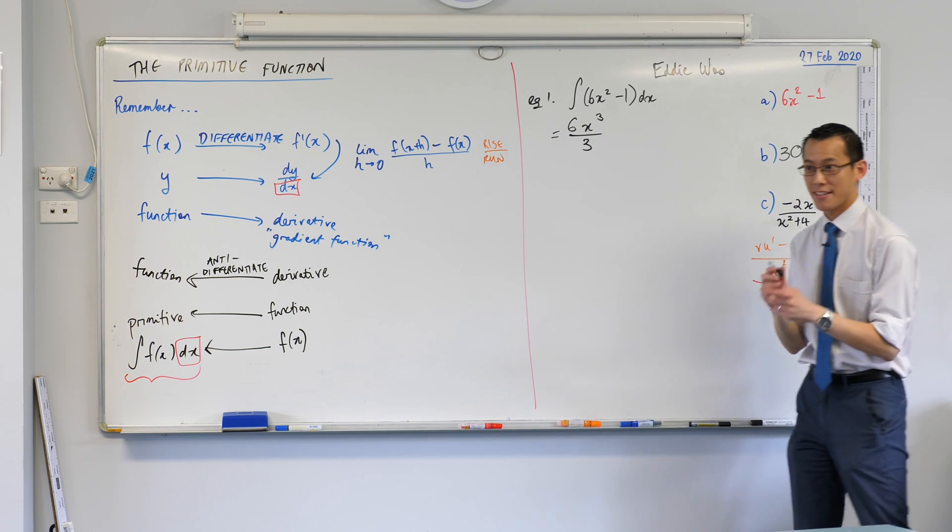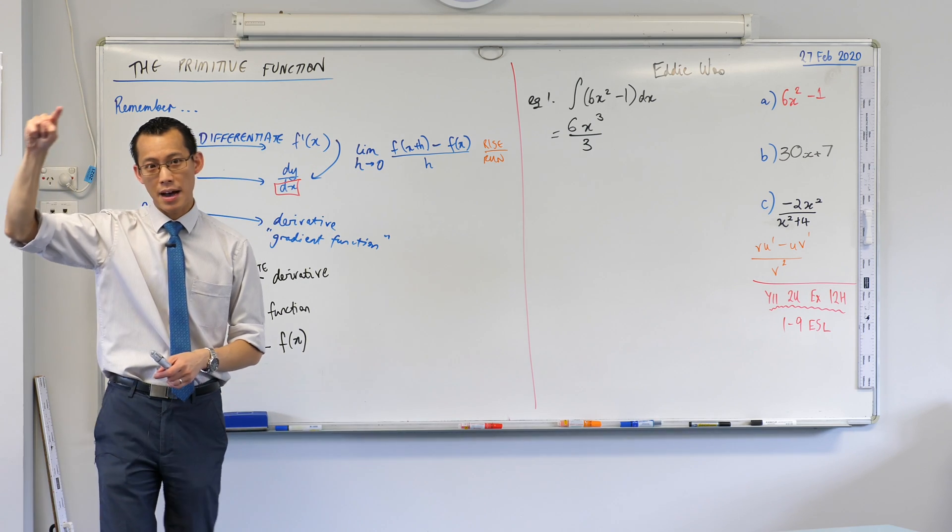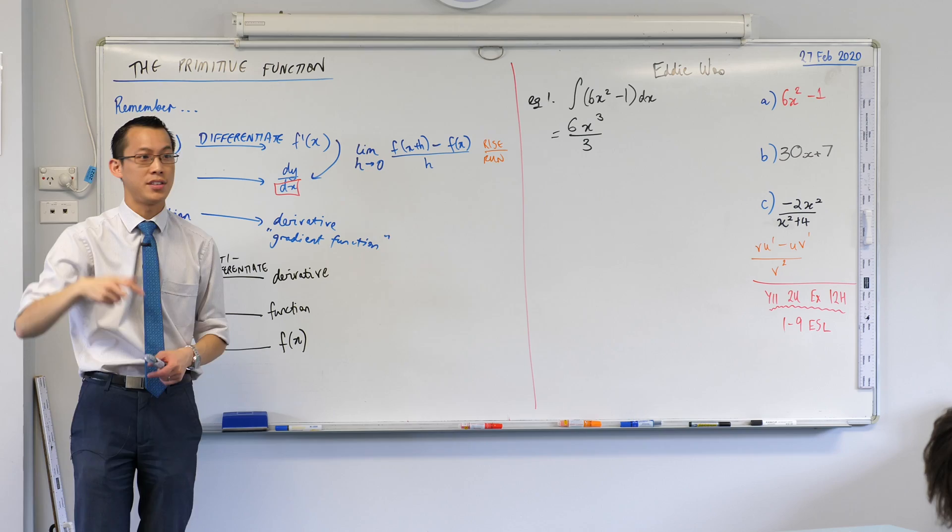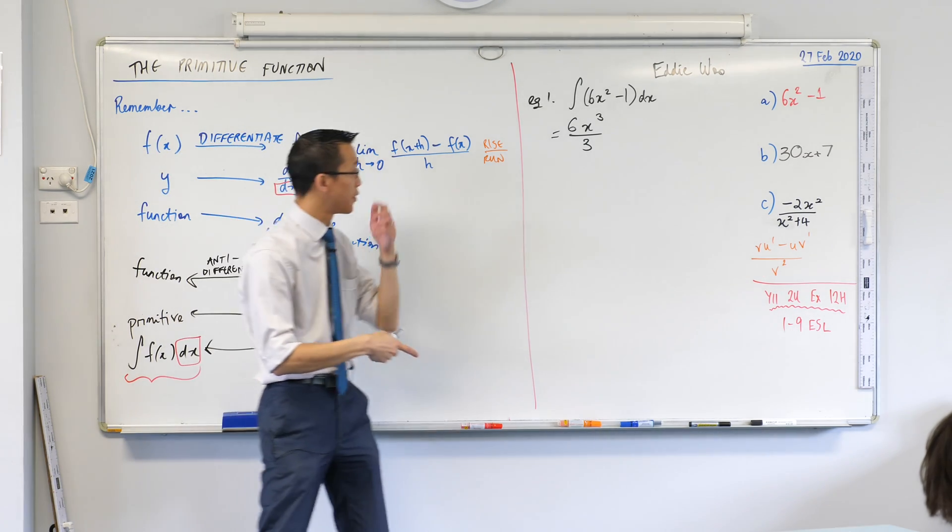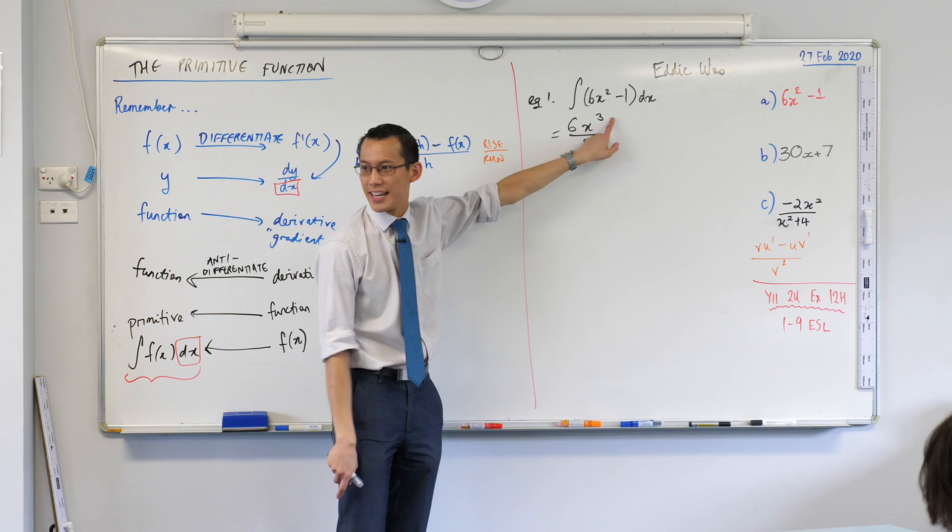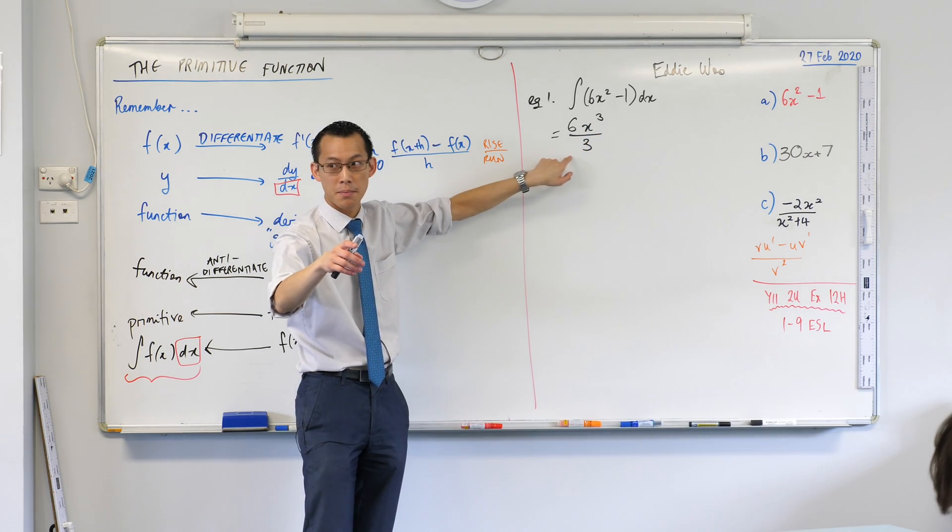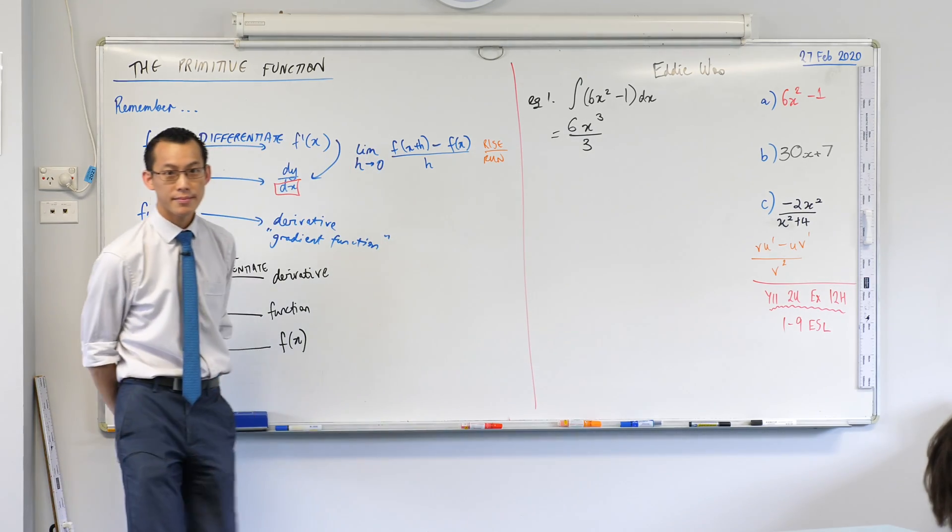Let me say this again. When you are differentiating, you multiply by the index and then you reduce the index by 1. Do you remember that? So I've done both of those things in reverse. I've increased the index and then instead of multiplying I divided by that.